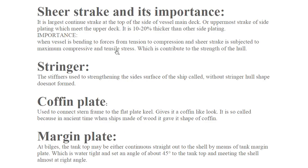The shear strake is the largest continuous strake at the top of the side shell plating, connected to the main deck. It is 10 to 20 percent thicker than other shell plating. When a vessel bends under forces, the shear strake is subjected to maximum compressive and tensile stresses, contributing significantly to the strength of the hull.